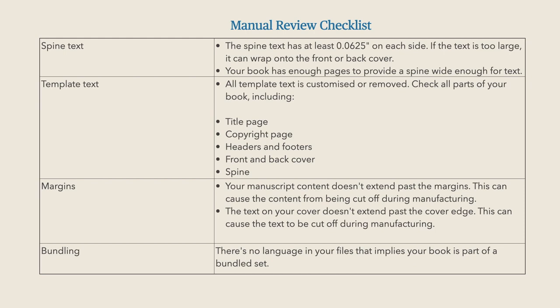Spine text: the spine of your book has to be at least 0.625 inches on each side. If the text is too large, it can wrap onto the front or back cover — you don't want that. Make sure there's a little gap between the edges of your spine and your text.